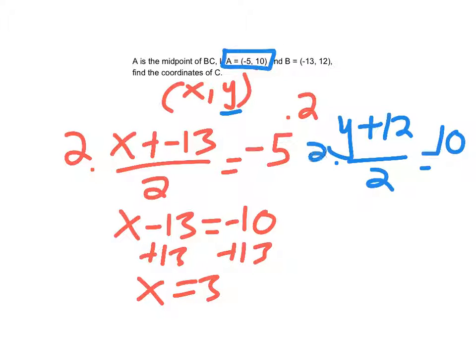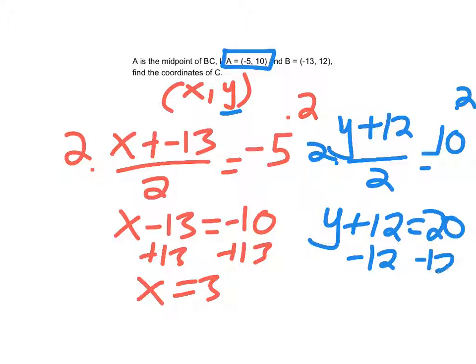Let's move on to this. Multiply both sides by 2. So I have y plus 12 equals 20. Subtract 12. So my y coordinate of my other endpoint would be 8.